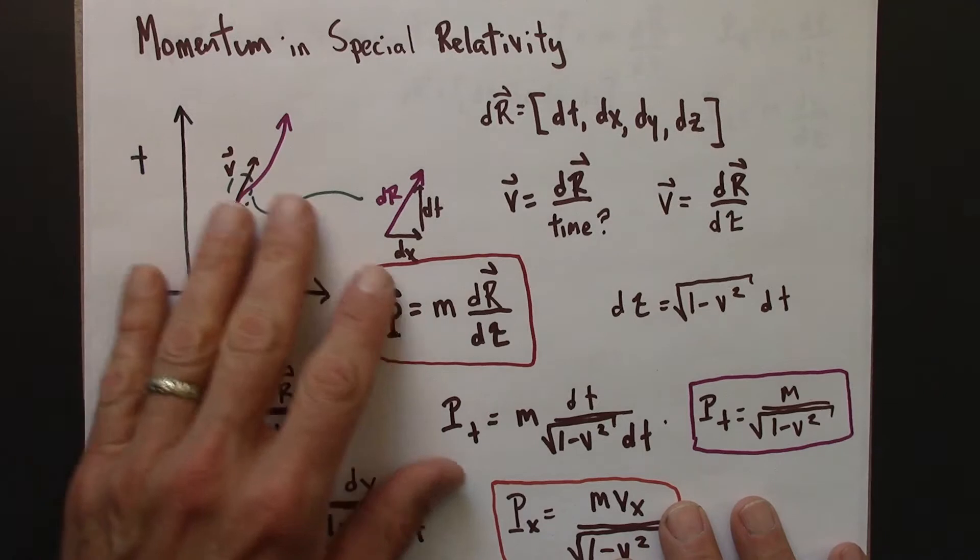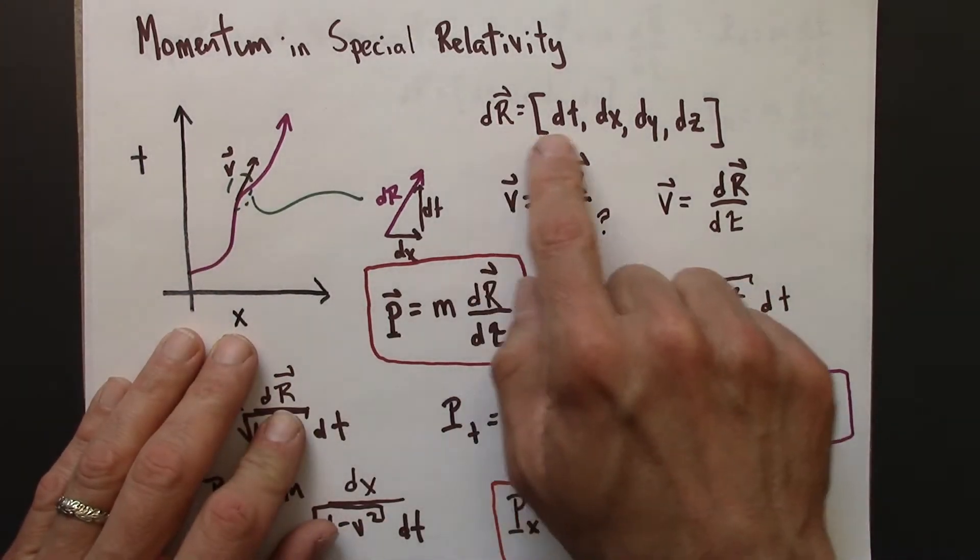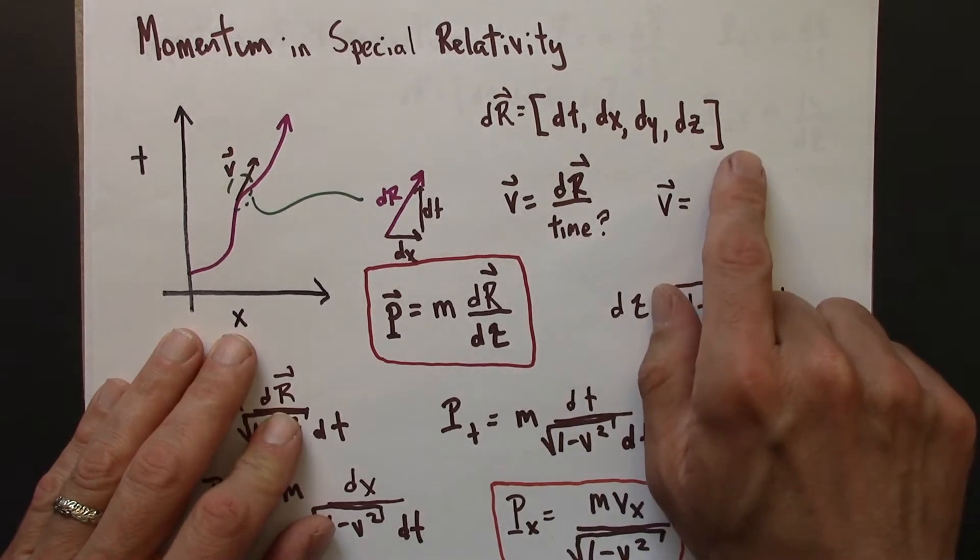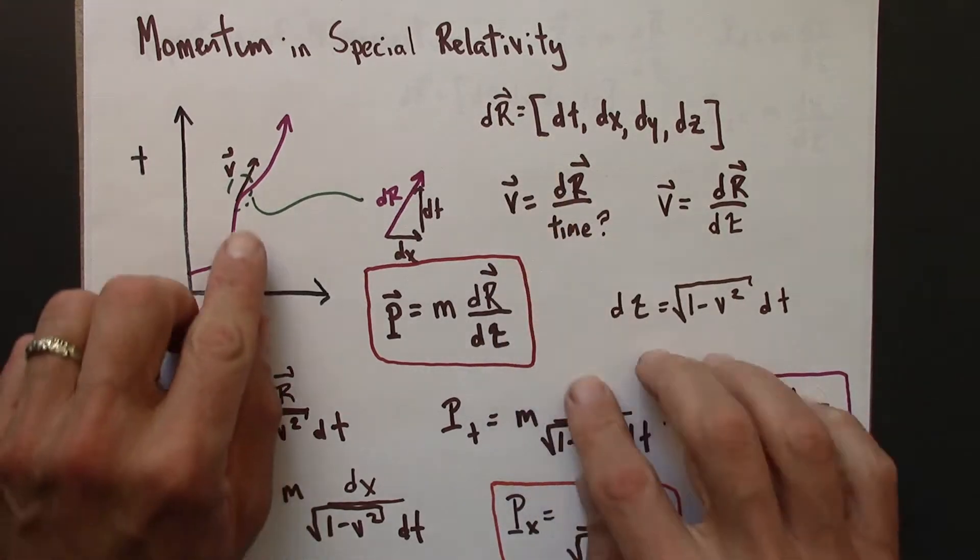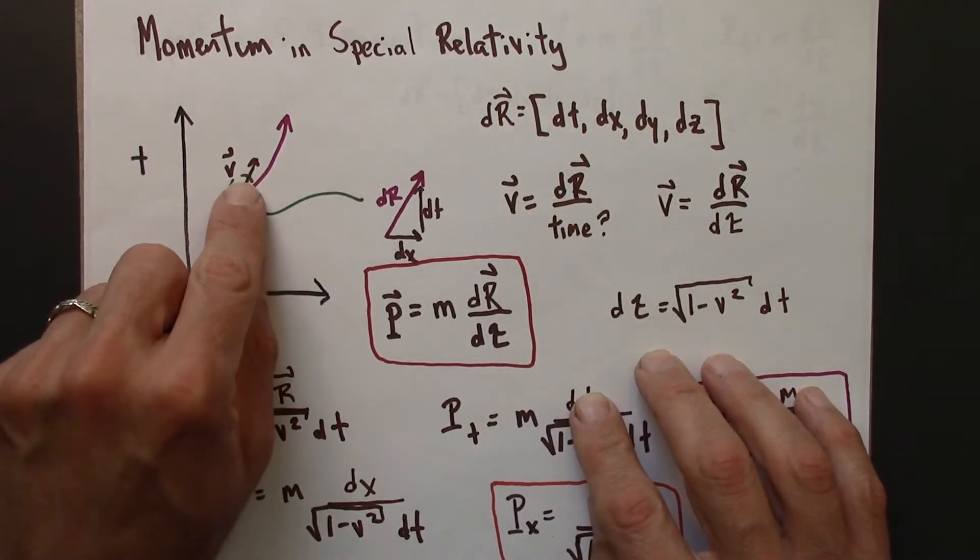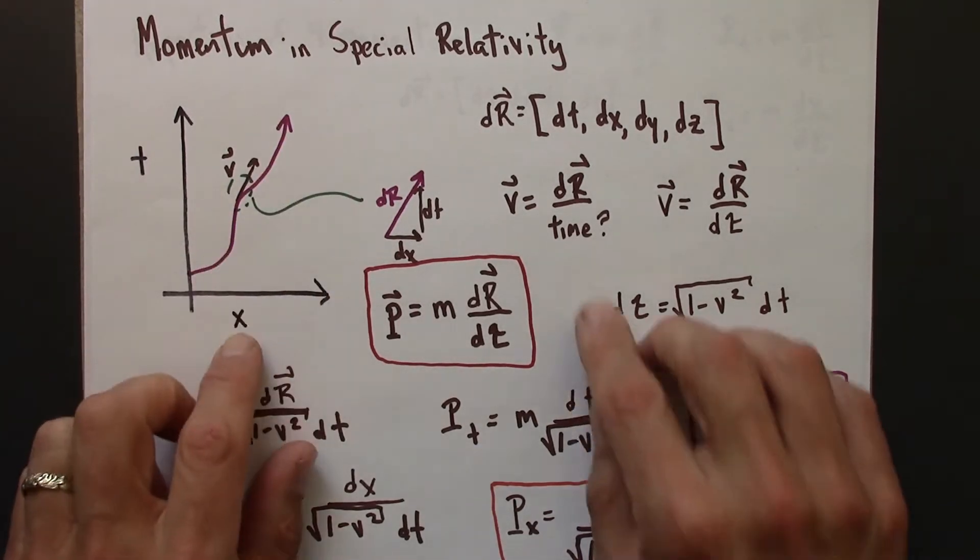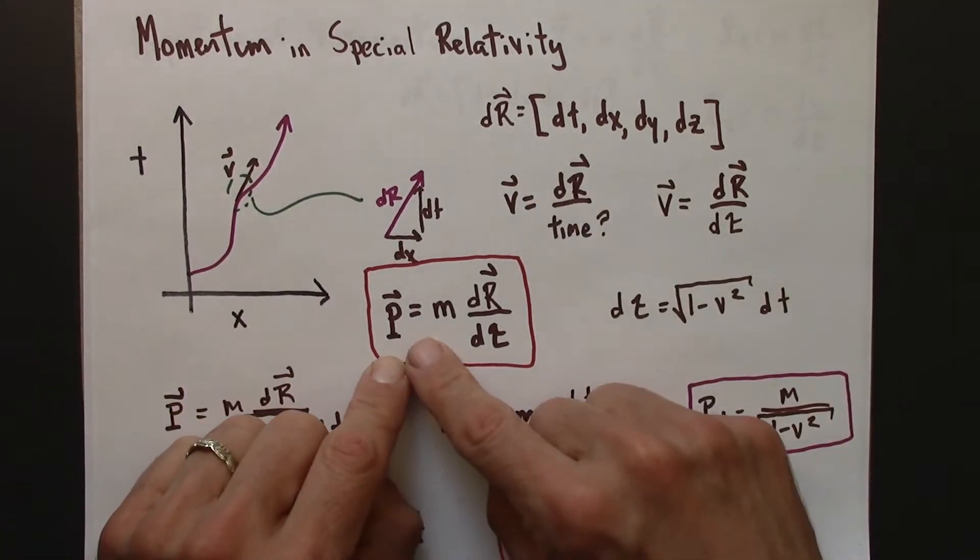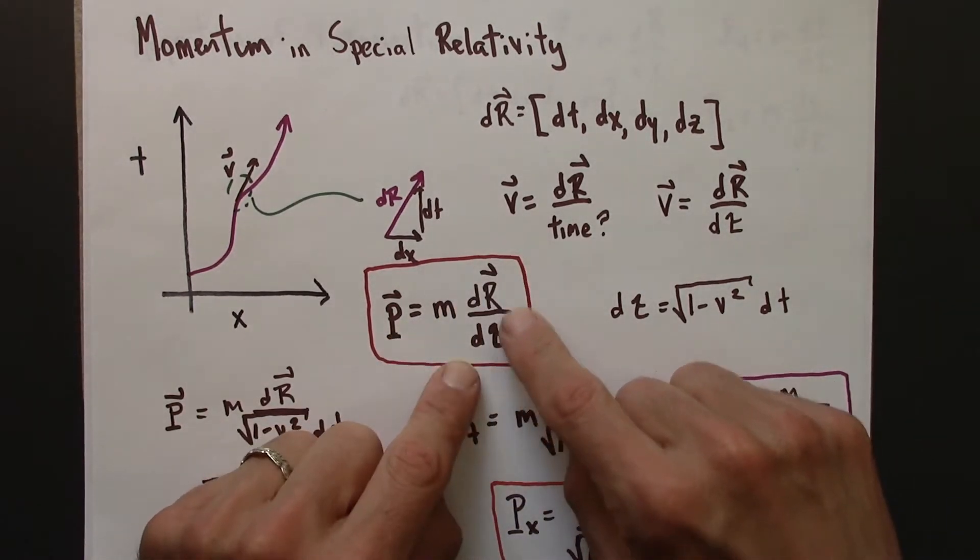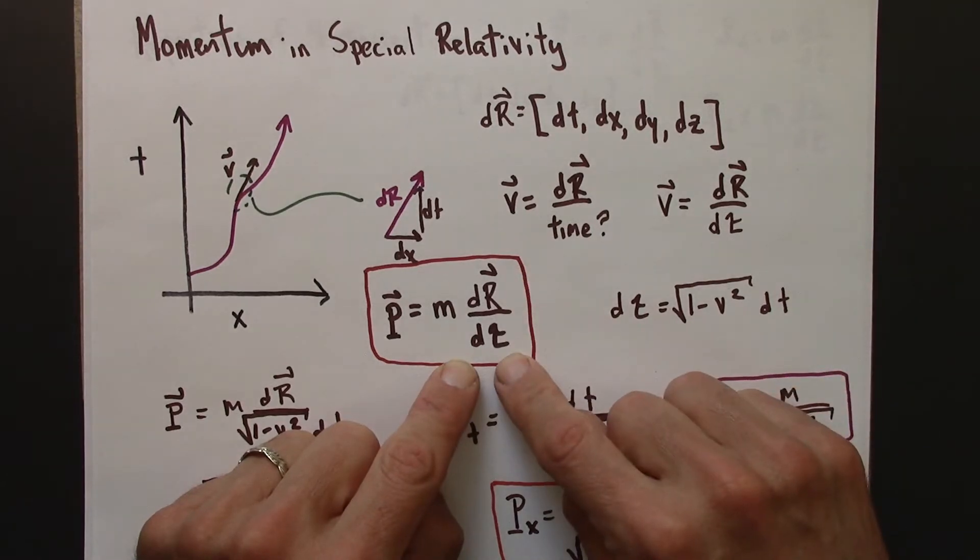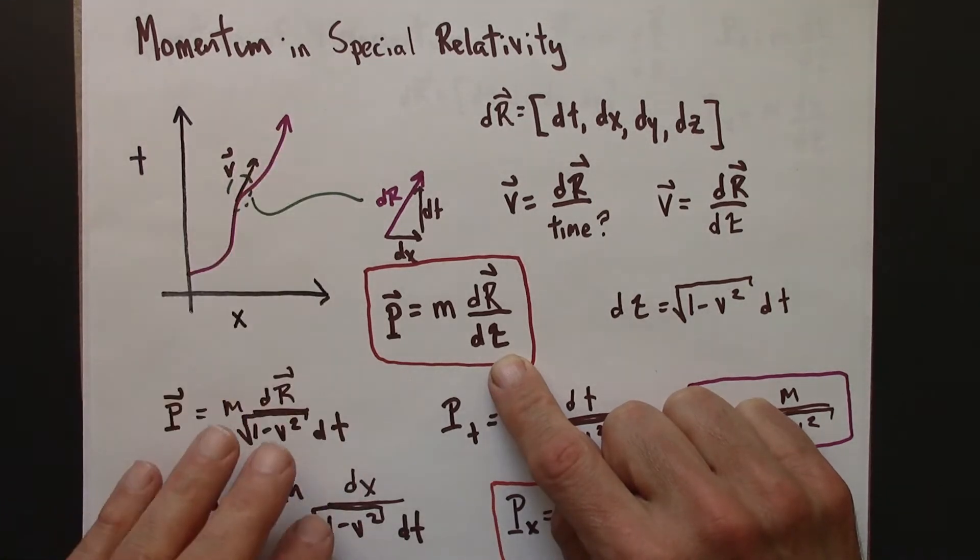In the previous video, we saw how to define momentum in special relativity. We formed this displacement vector, the difference in spacetime coordinates between two closely spaced events along the world line of the object. Then we define the momentum by multiplying by mass, and this is a velocity-like thing, displacement over time. But the time is tau, the proper time, the time according to the object itself.